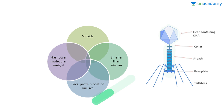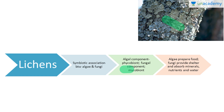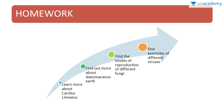Lichens are a symbiotic association between algae and fungi. The algal component is known as the phycobiont and the fungal component as the mycobiont. Algae are autotrophs that produce food, while fungi provide shelter and absorb minerals, nutrients, and water required for food production — that is how this symbiotic relationship works.